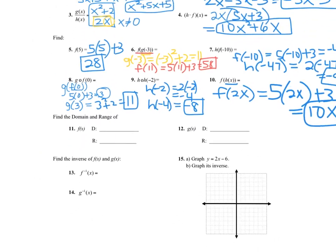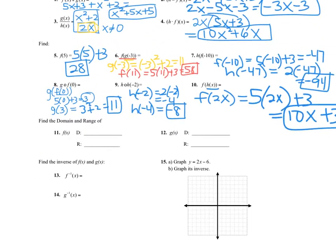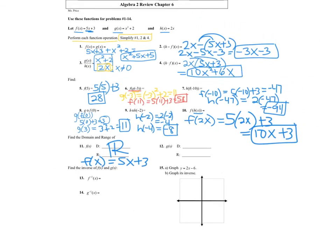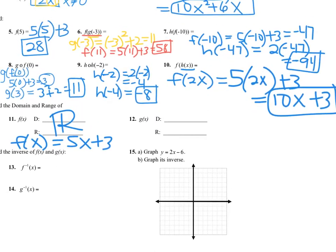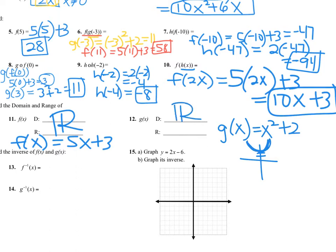Domain and range: f of x is simply 5x plus 3 — it's just a line. All slanted lines have both a domain and range of all real numbers. g of x is a parabola: x squared plus 2. If you graph that, you go up 2 and draw a U shape. The domain of parabolas is all real numbers, and the range would be y is greater than or equal to 2.